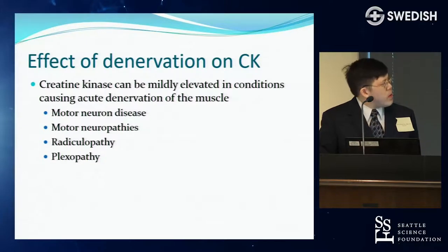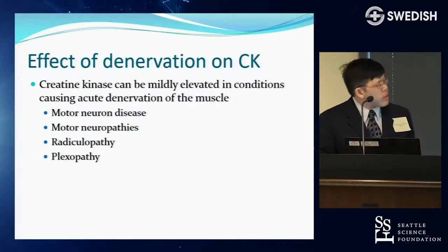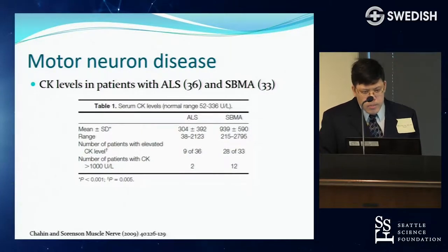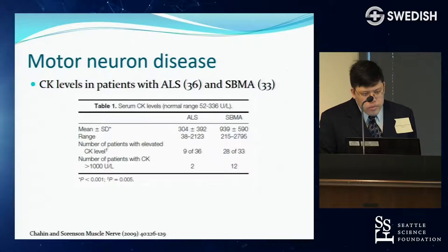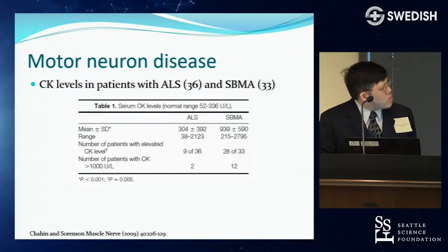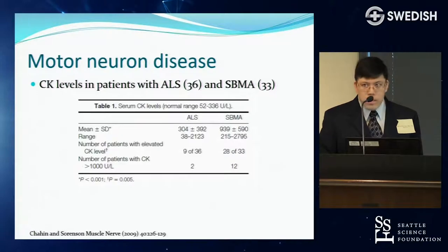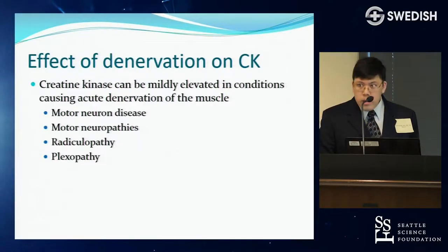Other than muscle disease, denervation can also increase CK. Acute denervation in muscle can cause CK elevations. For example, patients with ALS or SBMA (Kennedy's disease) — both neurodegenerative motor neuron processes — can have CK ranging from normal to over 2,000. A majority of Kennedy's disease patients have elevated CK, many over 1,000. So a purely neuronal process can still cause CK elevation.